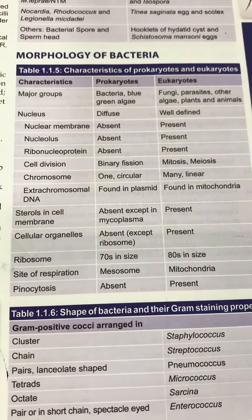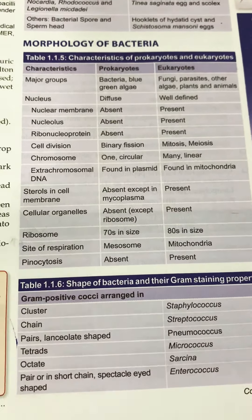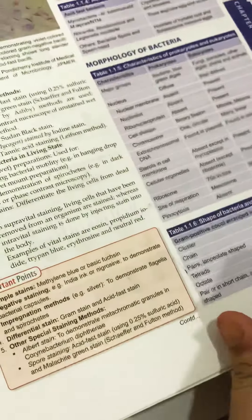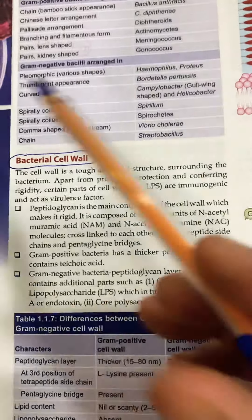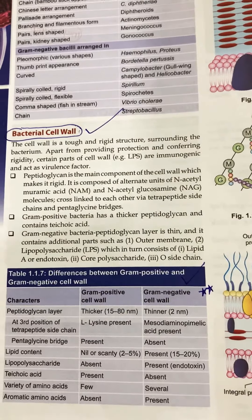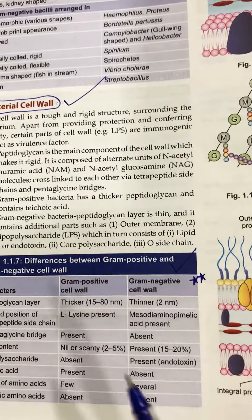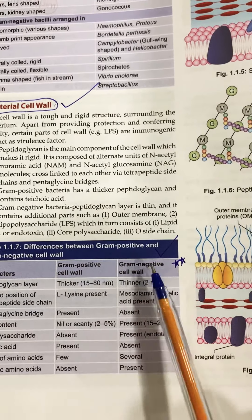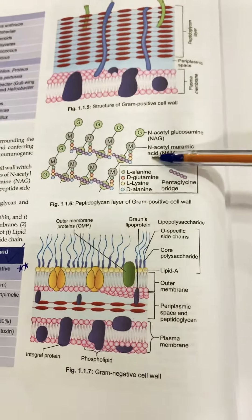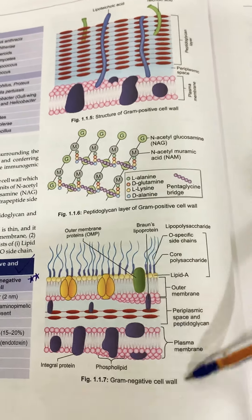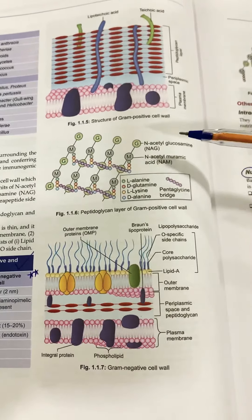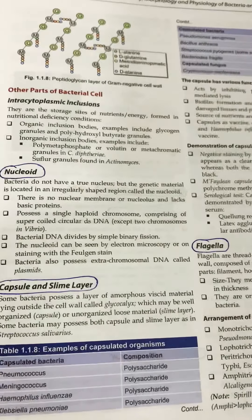Have a look at the various gram-positive bacteria arranged in chains and clusters. Then coming on to the bacterial cell wall — again a very important topic that must not be missed. The differentiation between the gram-positive cell wall and the gram-negative cell wall is covered, with important diagrams. Image-based questions can come from these diagrams, so do have a good look.